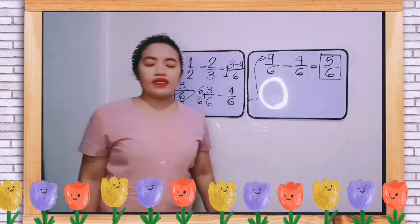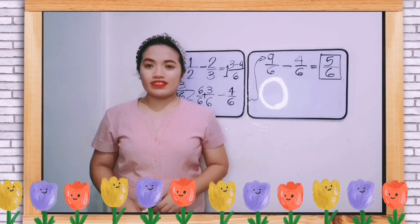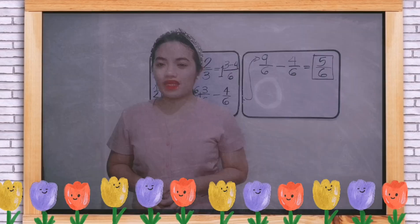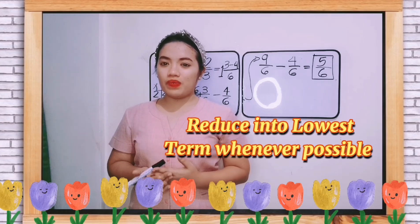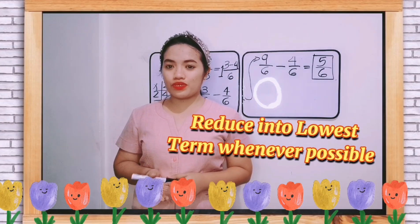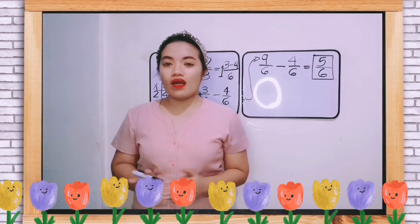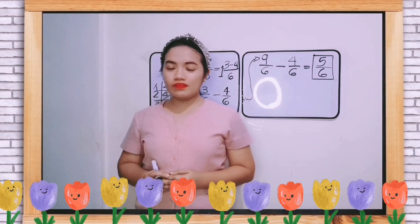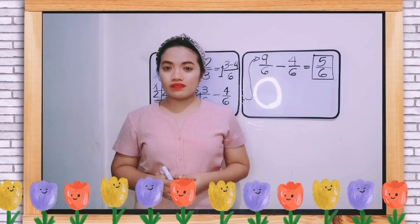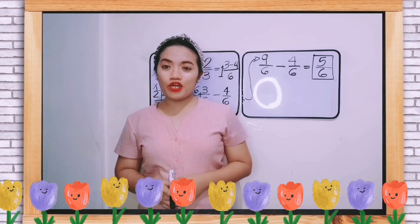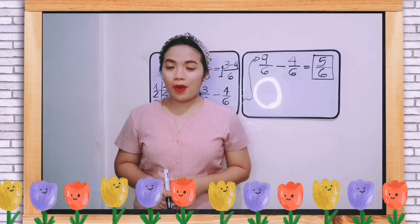The final answer is 5 over 6. So always remember, learners, that the answer must be reduced into lowest term whenever possible. So that's all for this video. Always remember, Paul Halmos once said, to learn mathematics is to do mathematics.